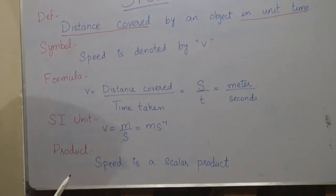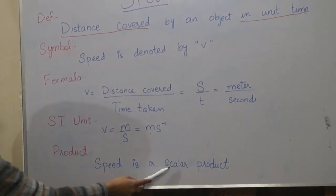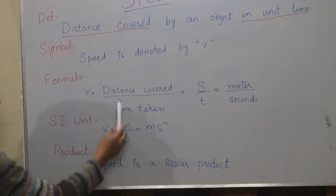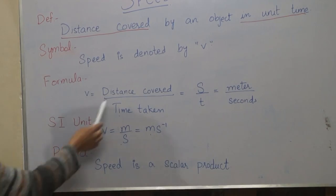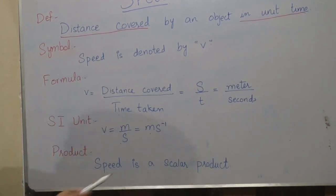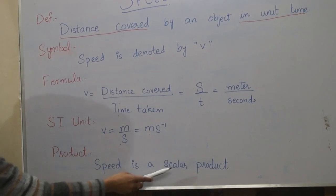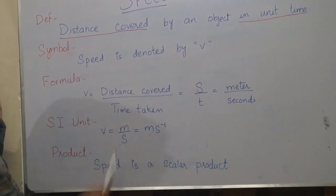If anything has direction, then it is called a vector product. We cannot tell the direction of the distance. Distance is described by its magnitude only. That's why it's a scalar product.